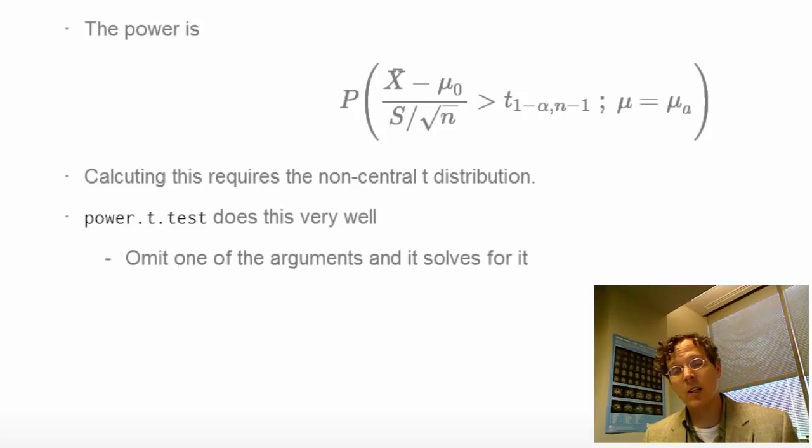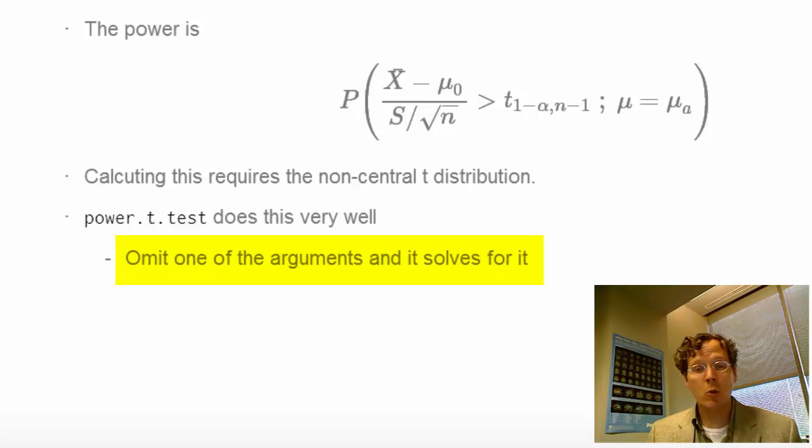What's nice about power.t.test is just like before, we have some parameters that we know, mu-naught and alpha, and some parameters that we don't know, mu-a, sigma, and n, for example. And if you omit one of them but specify the remainder, power.t.test will solve for the one that you've omitted.